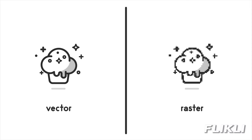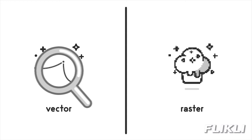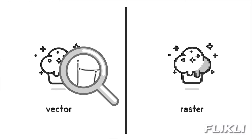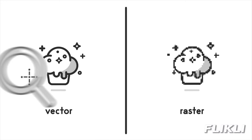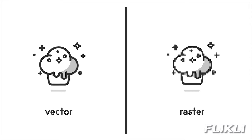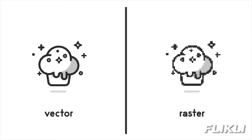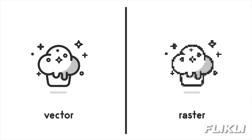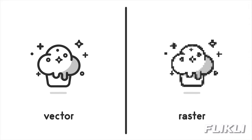The vector cupcake looks clear and undistorted because it's made up of points, lines, curves, and basic shapes. These elements are calculated for every level of scale, so the image quality stays the same regardless of size.